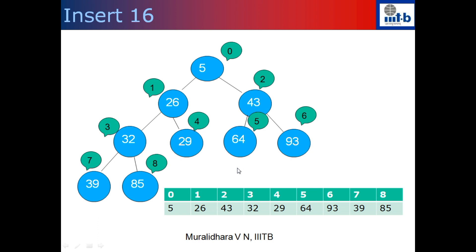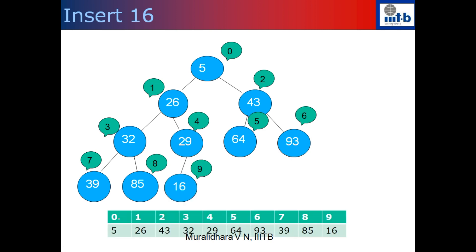These operations on the binary heap will take O(log n) time. Let's consider this heap and try to insert 16. When inserting a number, two things must hold: the heap must remain a complete binary tree, and the heap property must be satisfied. The first is easy — we just add 16 as the left child of 29, at index 9 in level-order traversal, incrementing n to 10.